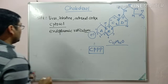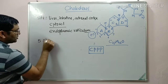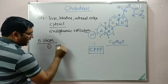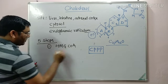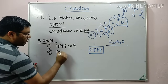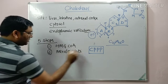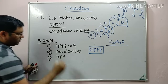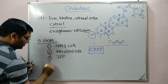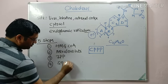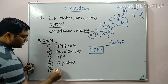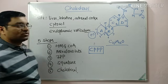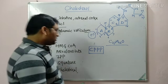There are five important steps in cholesterol biosynthesis. First is the synthesis of hydroxymethyl glutaryl coenzyme A. Second is the formation of mevalonate. Third is the conversion of mevalonate into isopentenyl pyrophosphate. Fourth is the formation of squalene, which is a 30-carbon compound. And the last step is the conversion of squalene into cholesterol.